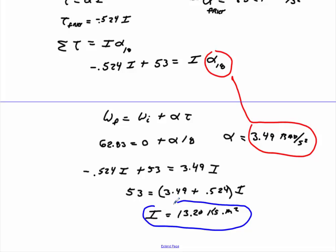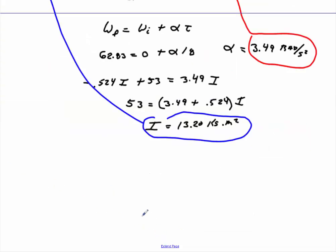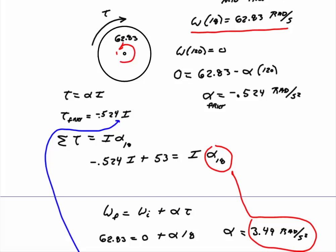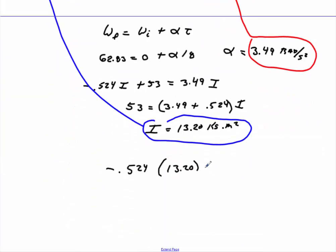Now to get the torque, all you have to do is take that value we have right here, put it right back into the equation here. So really all we have to do is multiply that by negative 0.524, so we take negative 0.524, multiply it by 13.20, and that will give you the value, the correct answer here, negative 6.91, which is what I got when I ran this problem. And that would be Newton meters.